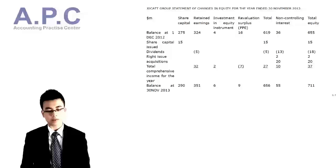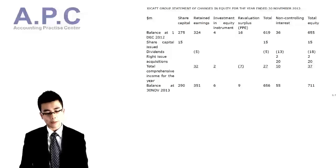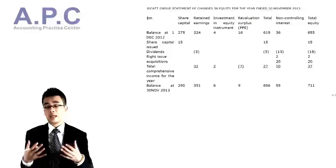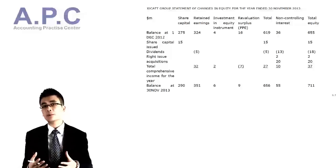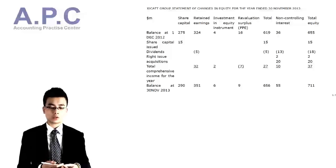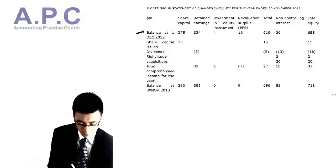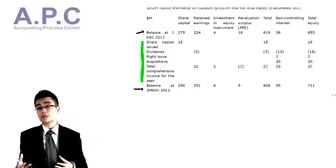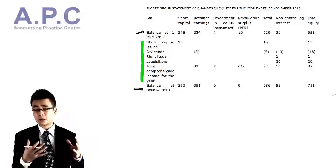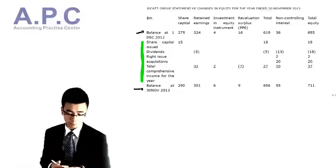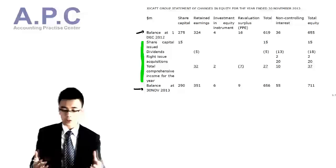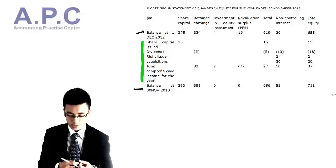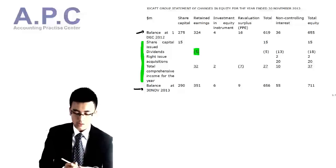Next we look at the statement of changes in equity. It is a reconciling process showing shareholders how opening equity reconciles to closing equity. We've got the balance brought forward and balance carried forward. Items between the two reconcile the opening to the closing balance. Share capital: issued share capital during the year is 15. We've got dividends — the most important part. Dividend from retained earnings is always a cash flow.